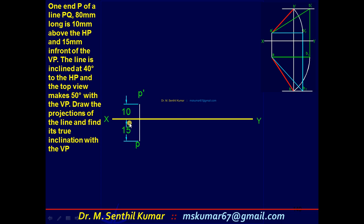This is the problem. Draw XY. Mark one end 10 above HP and 15 in front of VP, side by side. Draw a dummy picture and try to mark the values from the given question. One end, the line is 80mm long, so a dash b1 dash equals 80. Mark 80 here and here. 10 above, 15 in front, so a dash is 10, a is 15.